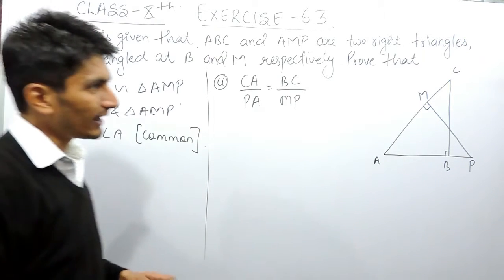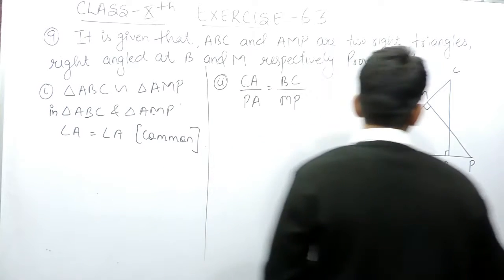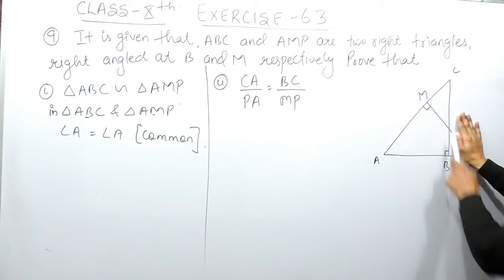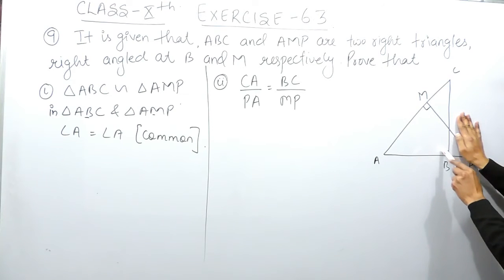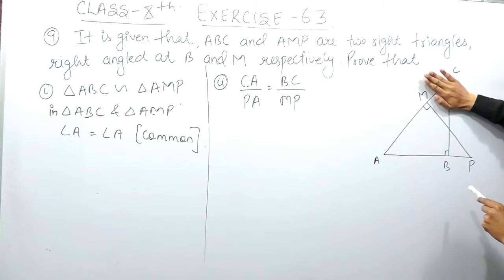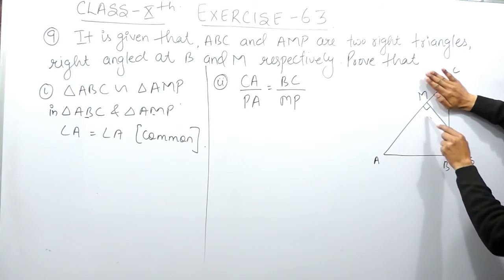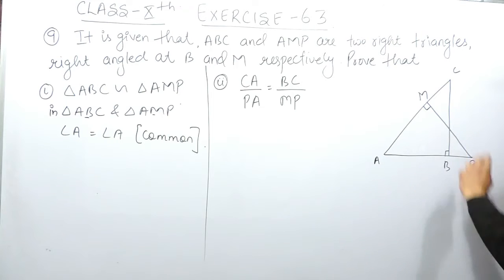For the next angle, if I look at triangle ABC, this side is the perpendicular, meaning this angle must be 90 degrees. Similarly, for triangle AMP, PM is also a perpendicular, meaning this angle must also be 90 degrees. So there are two angles in both triangles that are each 90 degrees.